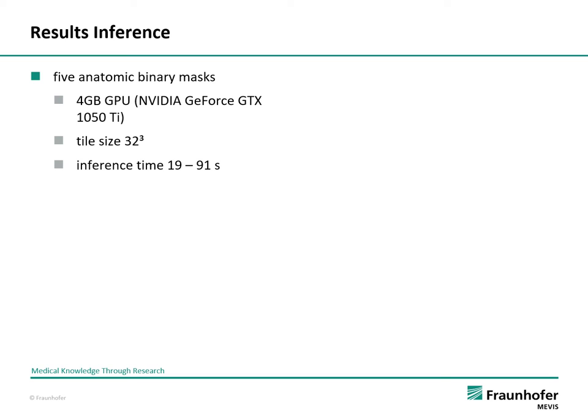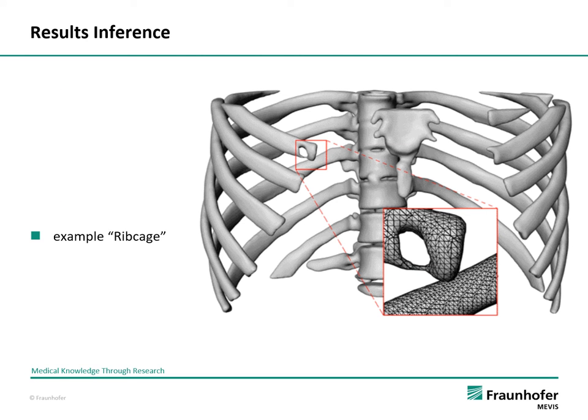We calculated the distance from each voxel of the binary mask to the nearest point of the reconstructed surface. The mean error over all 5 masks was 0.28 voxel diagonals, and the maximum error was 3.6 voxel diagonals, notably at very small structures which had only voxel size. Taking the ribcage as an example, the binary mask has a size of 333 x 267 x 169 voxels, and inference time was 91 seconds.